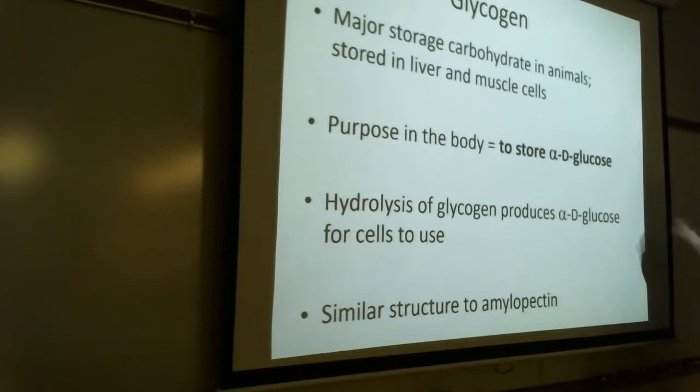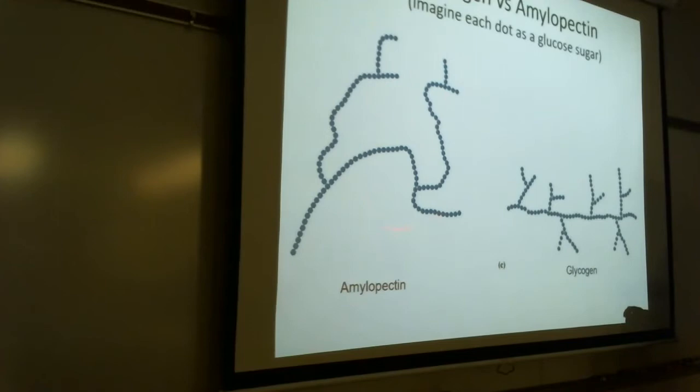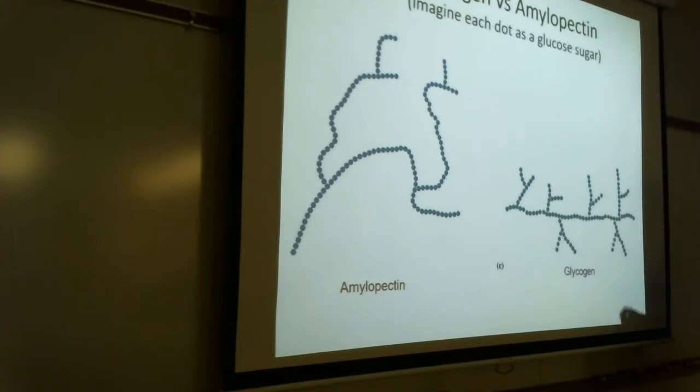And it's got a similar structure to amylopectin. That's one of the ones we just talked about. That's a starch. But here's glycogen. So, the branches are a little bit longer than amylopectin versus glycogen. So, that's all we're going to deal with in terms of disaccharides and monosaccharides in elementary organic.